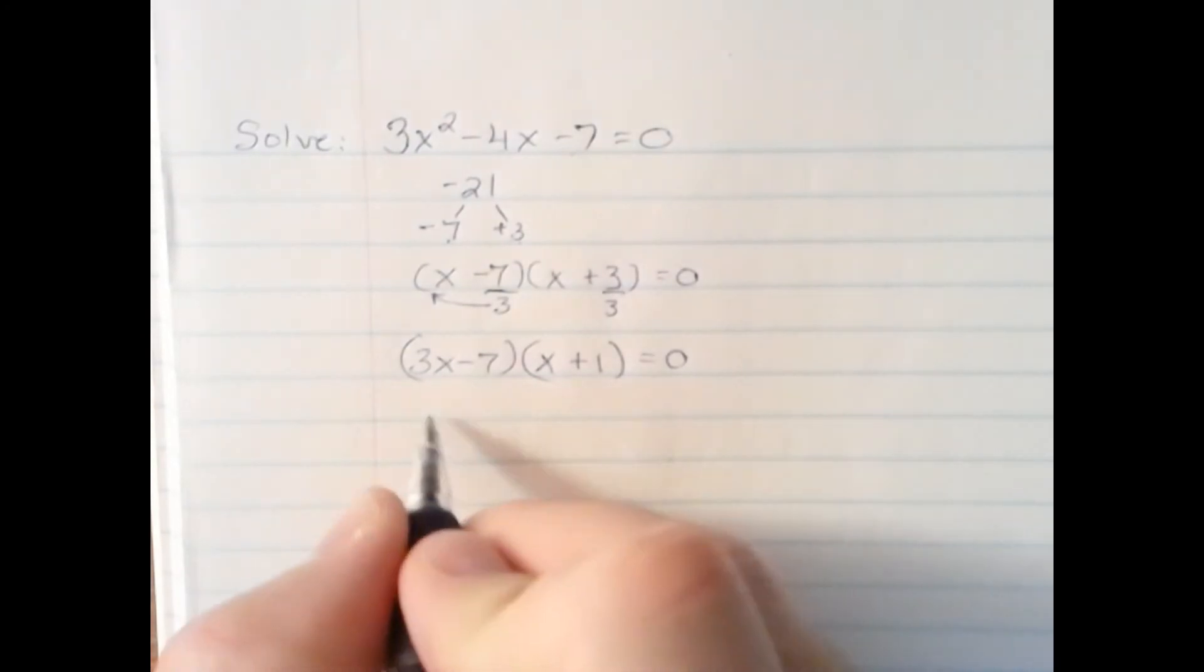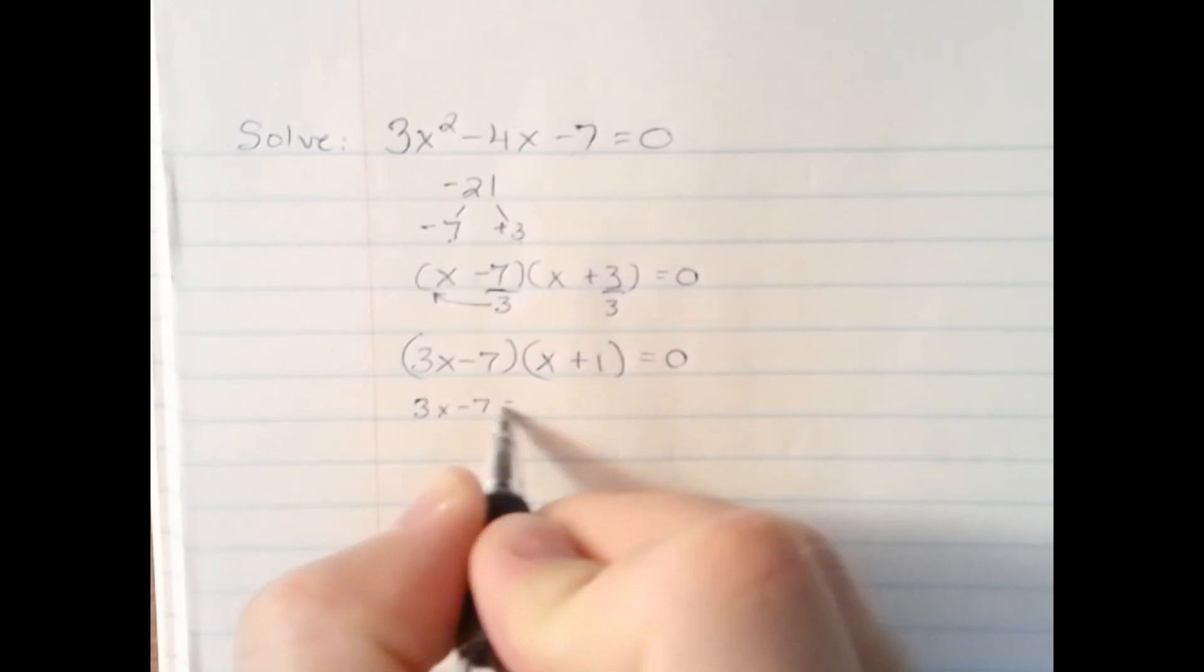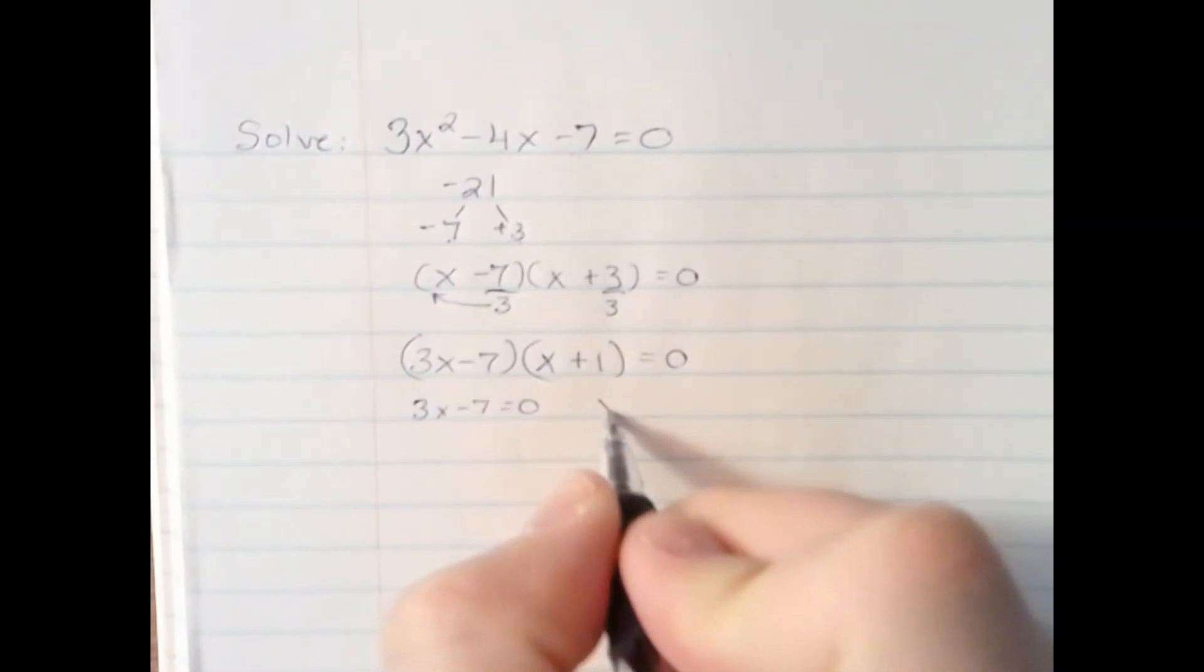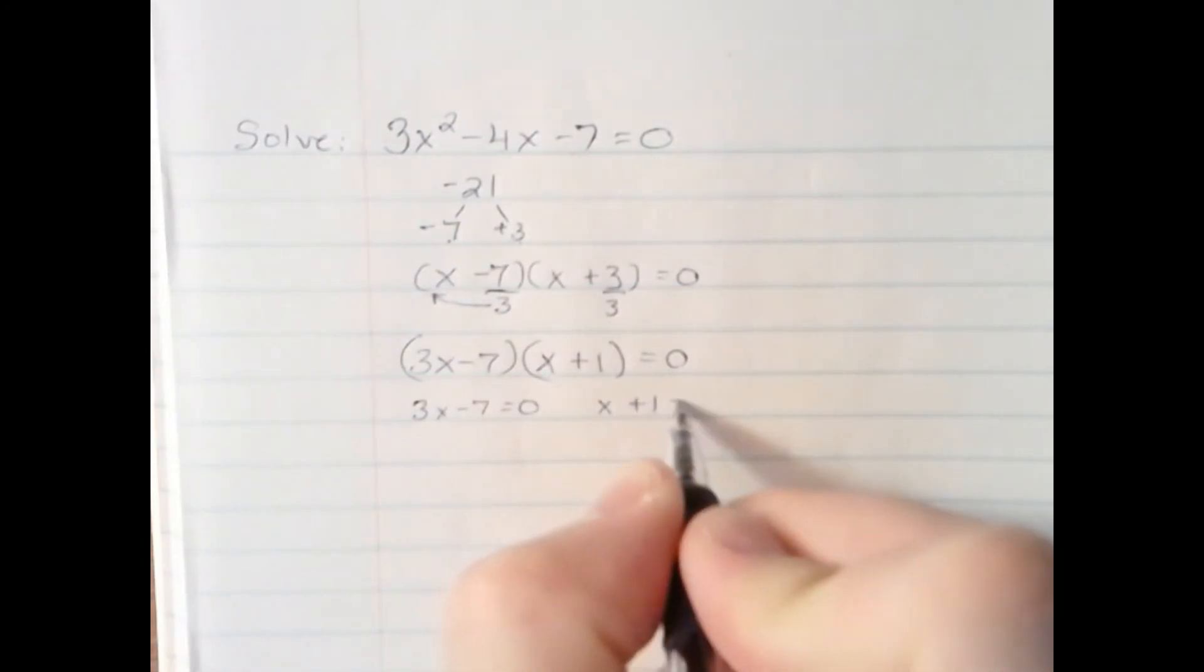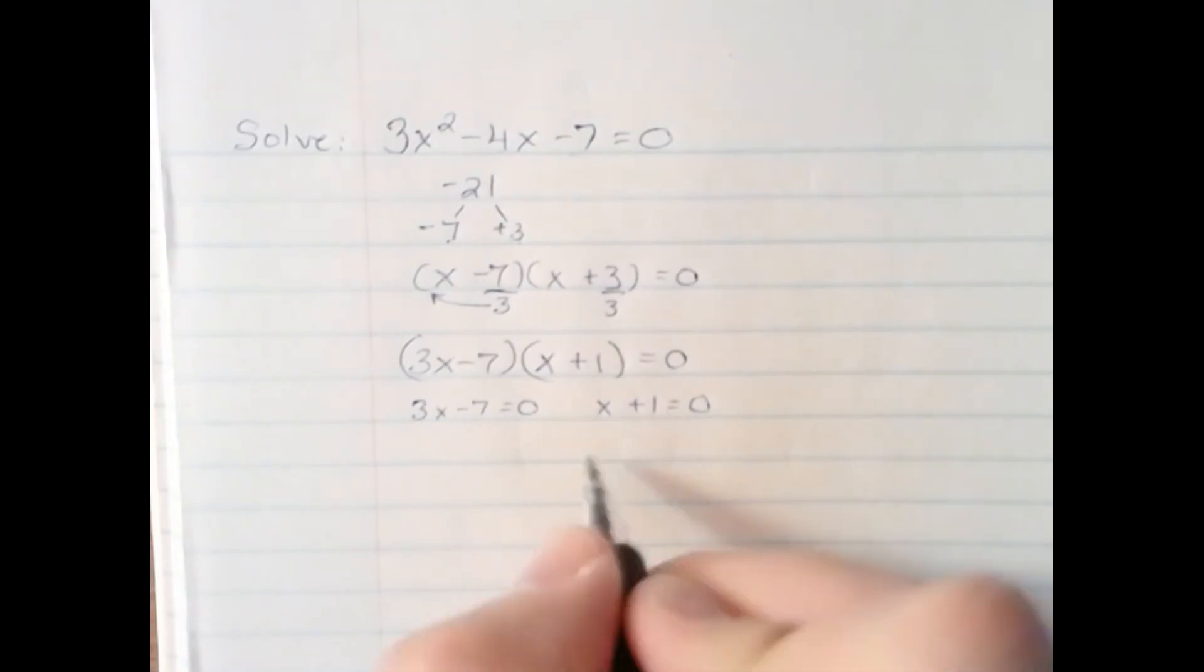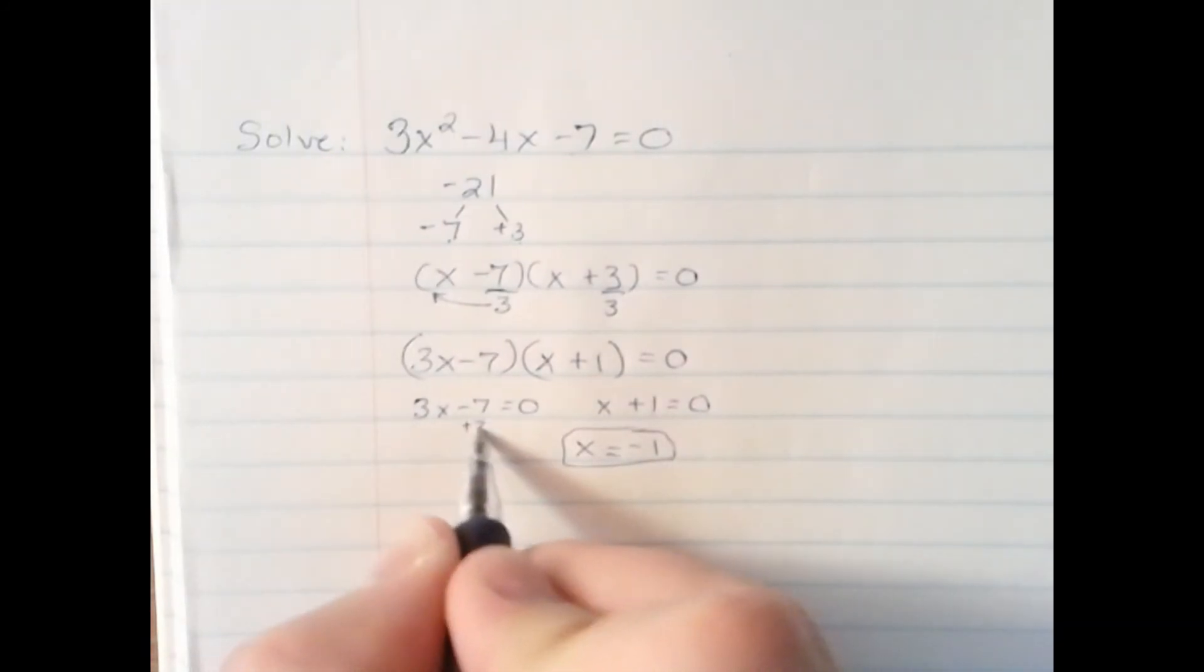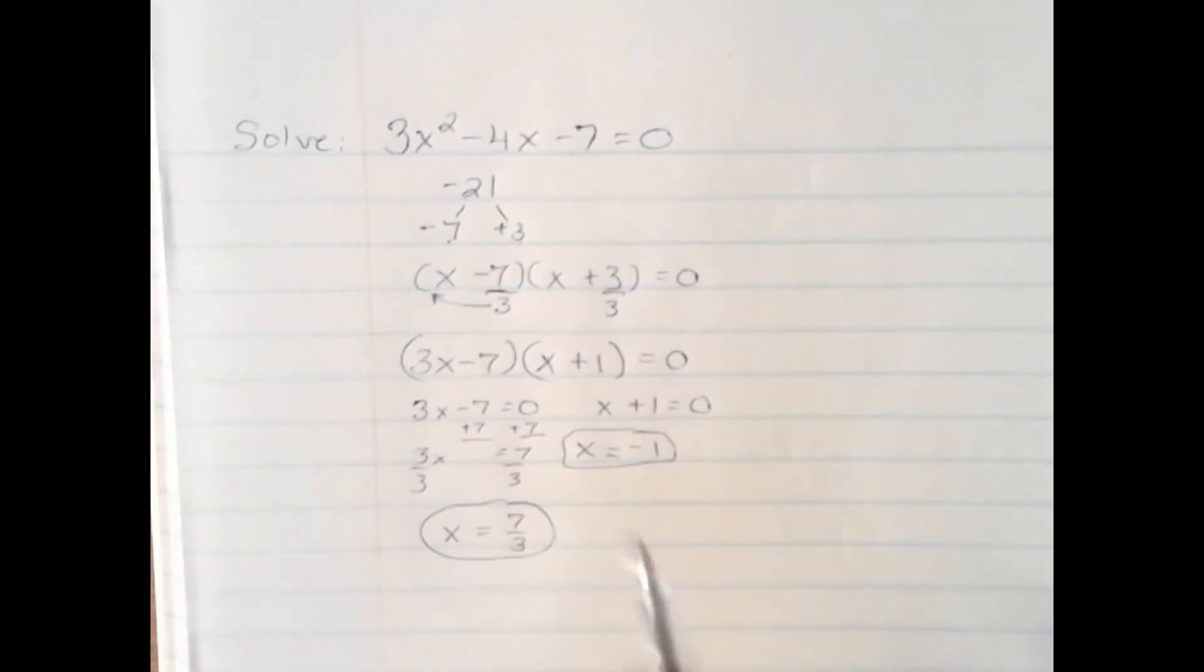Now, it's up to us to simply solve each term to find the value of x. I think the second one is pretty easy. Negative 1 plus 1 equals 0. So there's one answer, negative 1. The other answer, we need to add 7 to both sides. We're left with 3x equals 7. And then we divide by 3 on each side. x equals 7 thirds. Two answers, x equals 7 thirds and x equals negative 1.